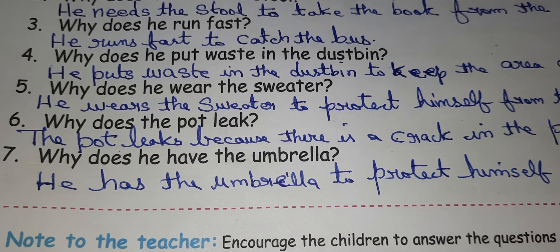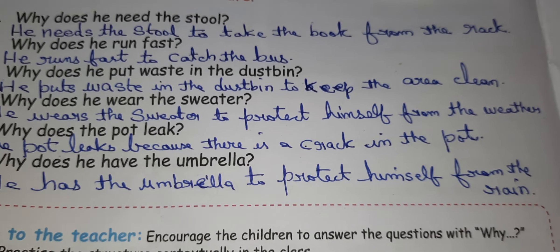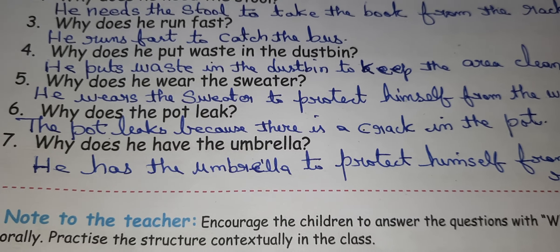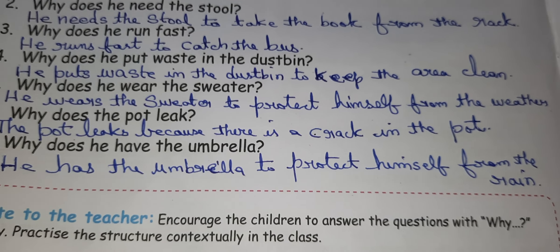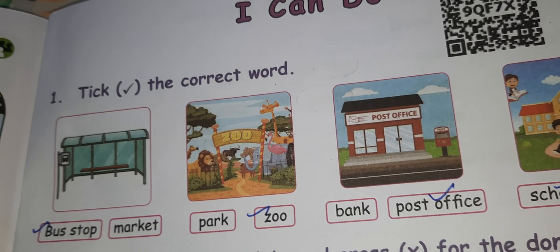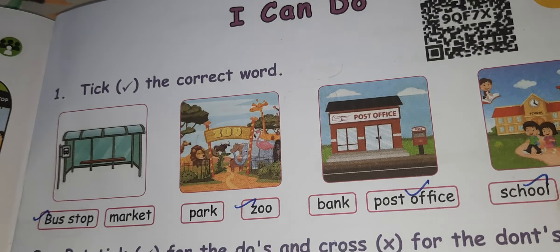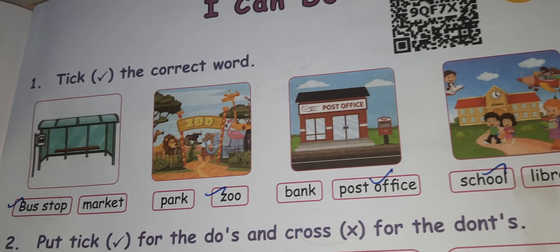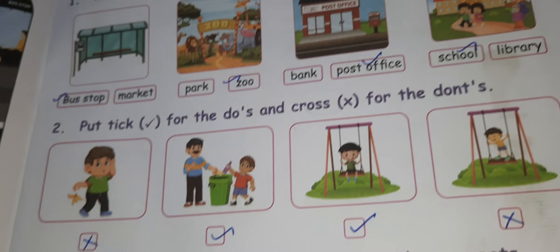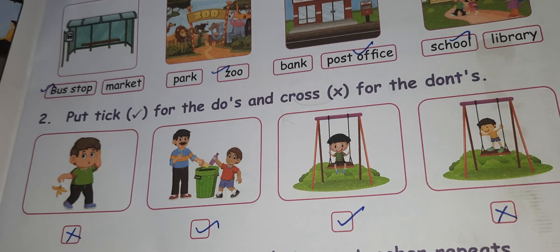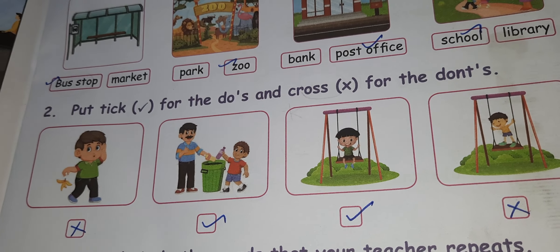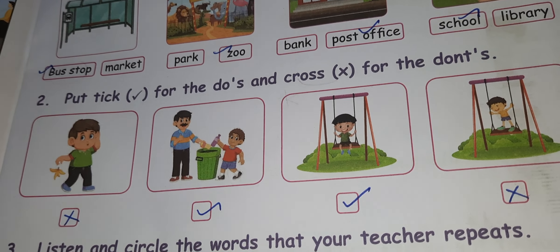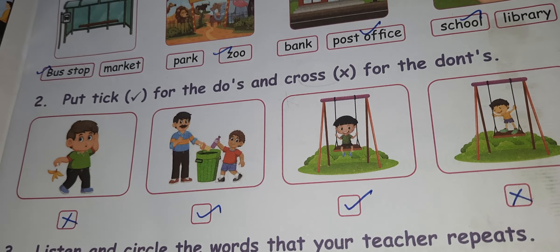Why does he wear the sweater? He wears the sweater to protect himself from the weather. Why does the pot leak? The pot leaks because there is a crack in the pot. Why does he have an umbrella? He has the umbrella to protect himself from rain. Next page - I can do. Tick the correct word. First one is wrong, second one is correct, third one is correct, fourth one is wrong.